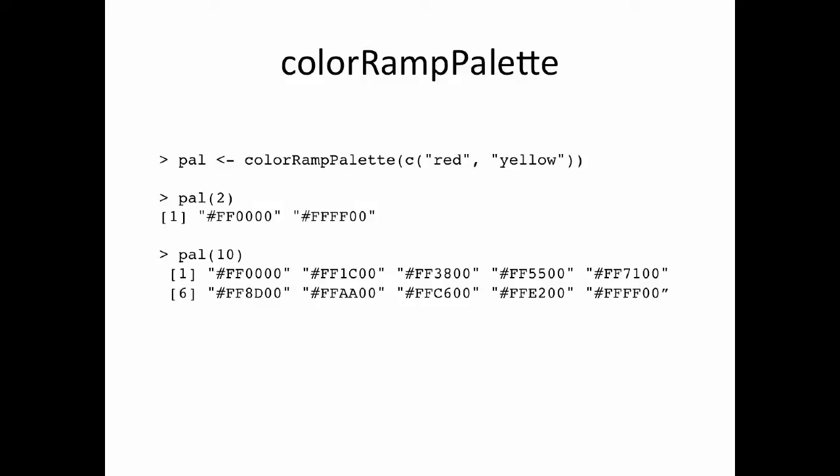Now if I say pal(10), the first element is red — FF on red, 0 on everything else — and the last element is yellow — FF on red, FF on green, 0 on blue. In between, I've got interpolated colors where green gradually increases as you go from red toward yellow. There's no blue at all, because you don't encounter blue when interpolating between red and yellow. You can see the hexadecimal representations changing as you go from red to yellow.